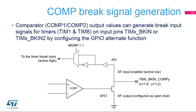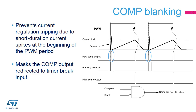Please see the timer training slides for more details. The comparator can be used in the cycle-by-cycle regulation loop for monitoring the peak value of the current flowing into the load. The purpose of the blanking function is to prevent incorrect current regulation tripping due to short-duration current spikes at the beginning of the PWM period. Short-current spikes caused by activating the power switches can produce false pulses on the comparator output, marked by the blue color on the diagram.